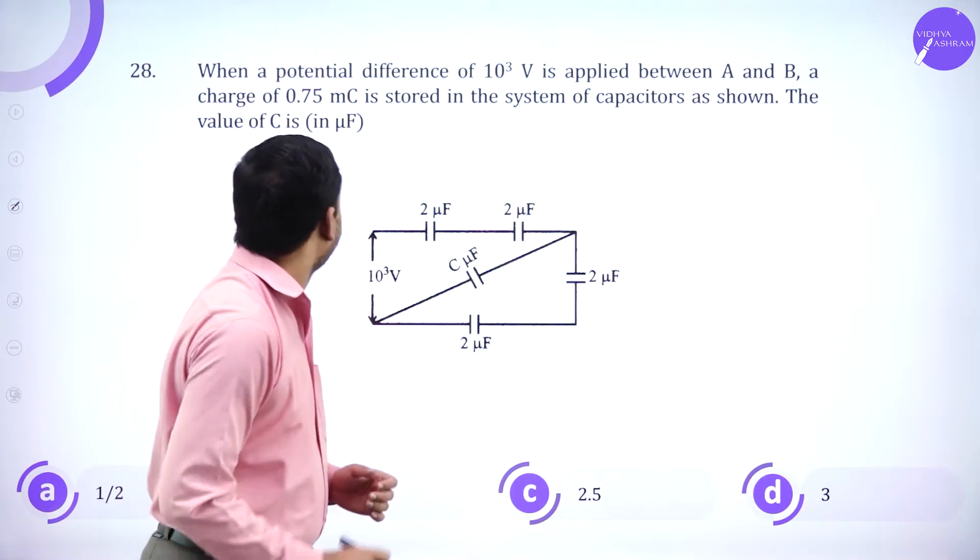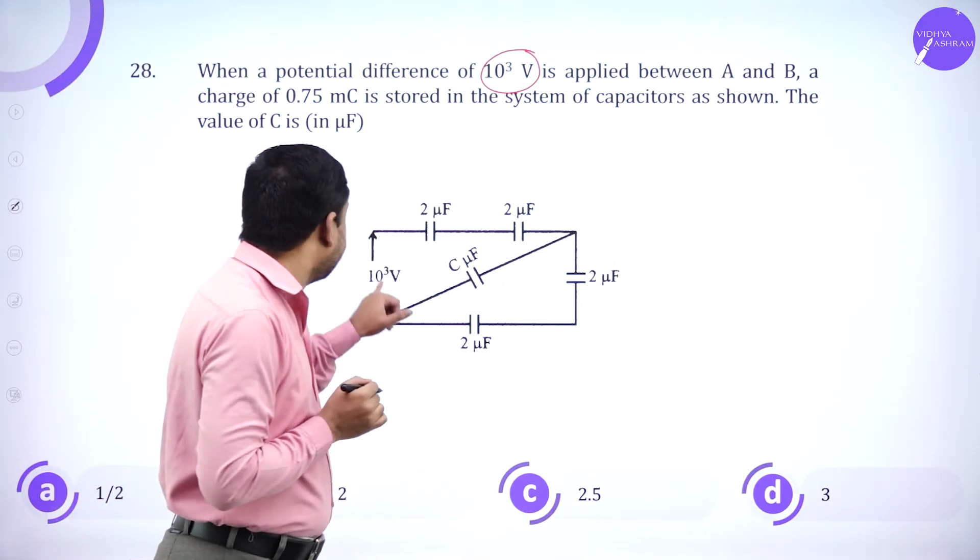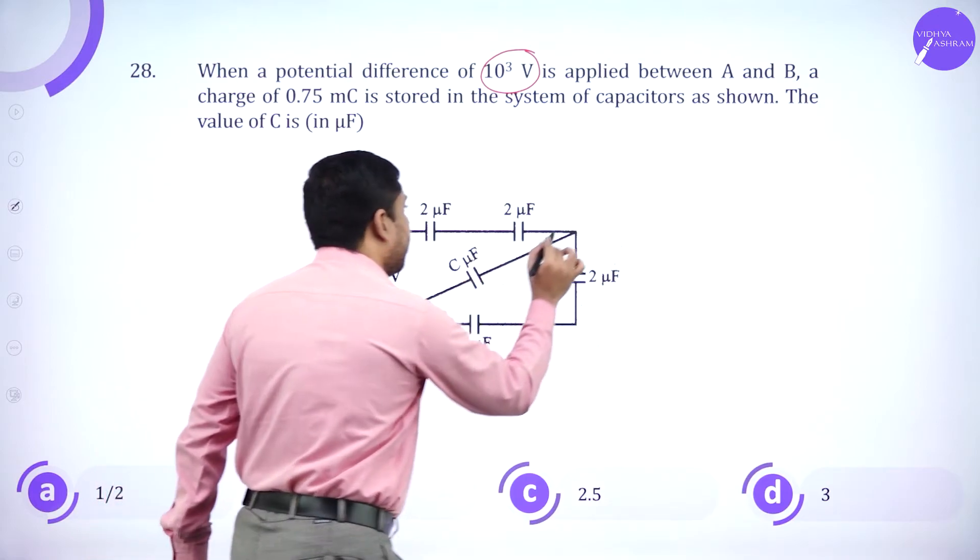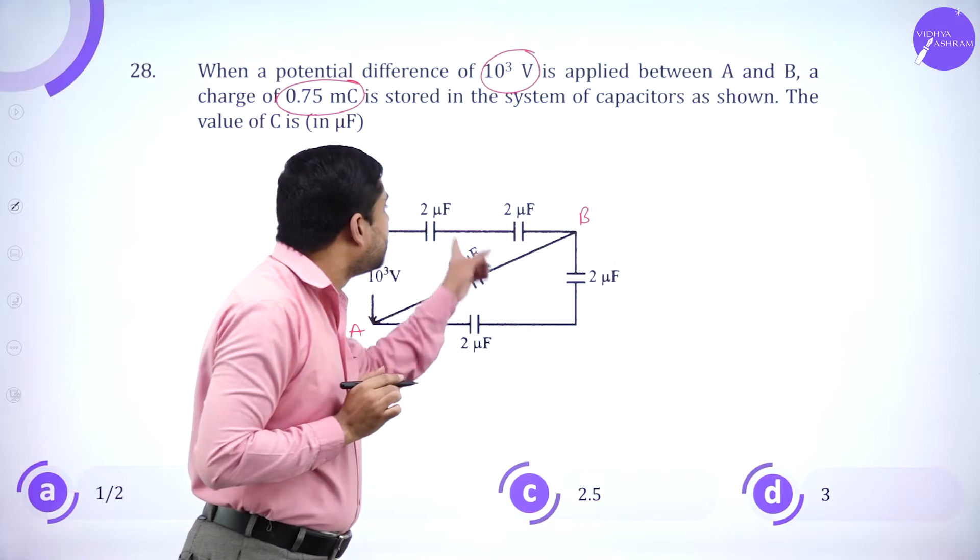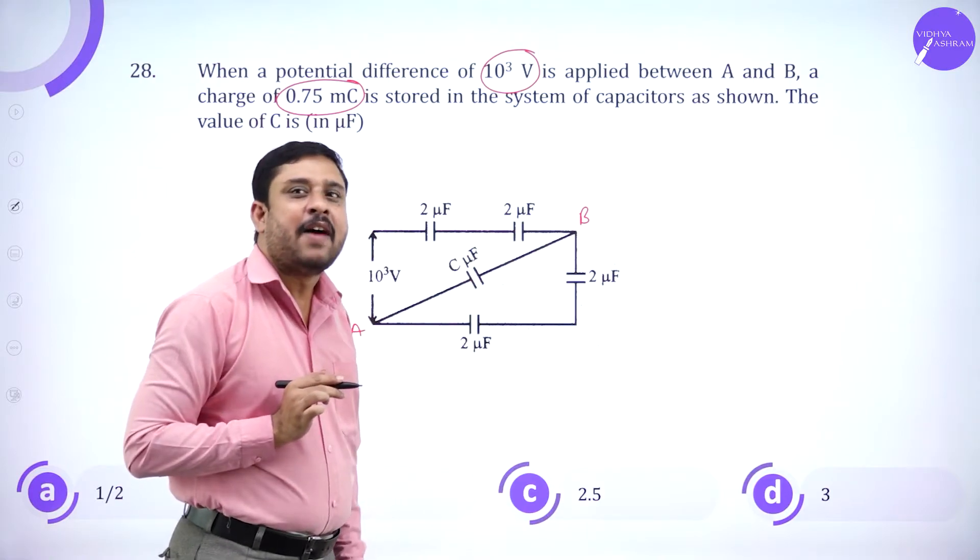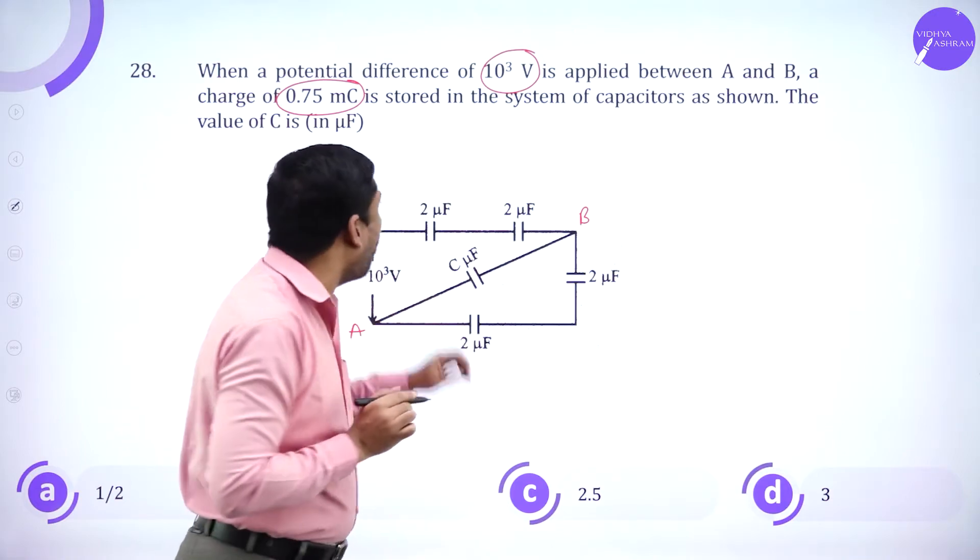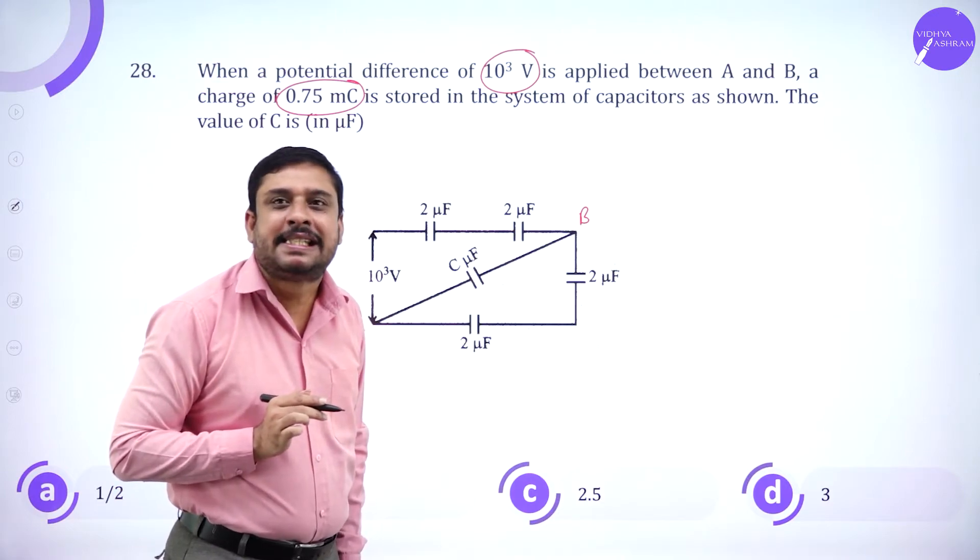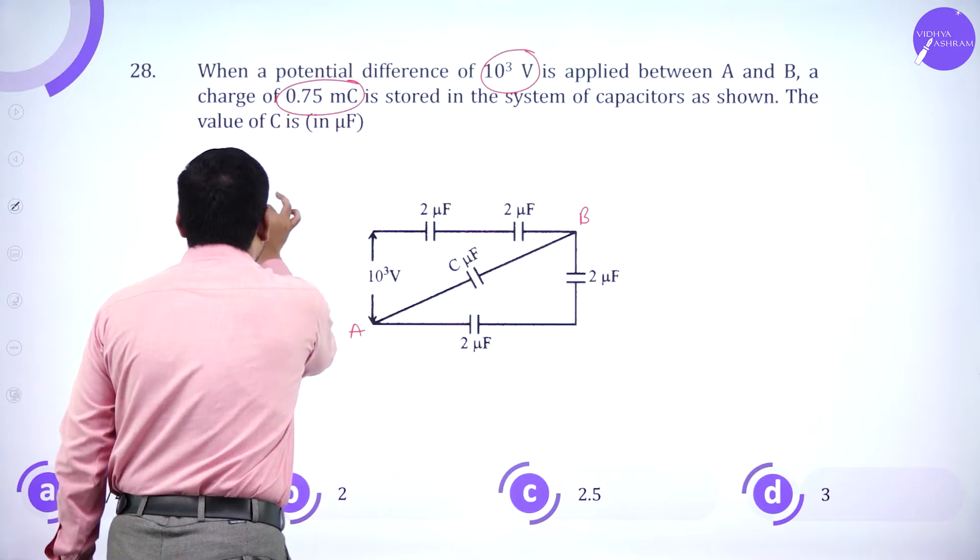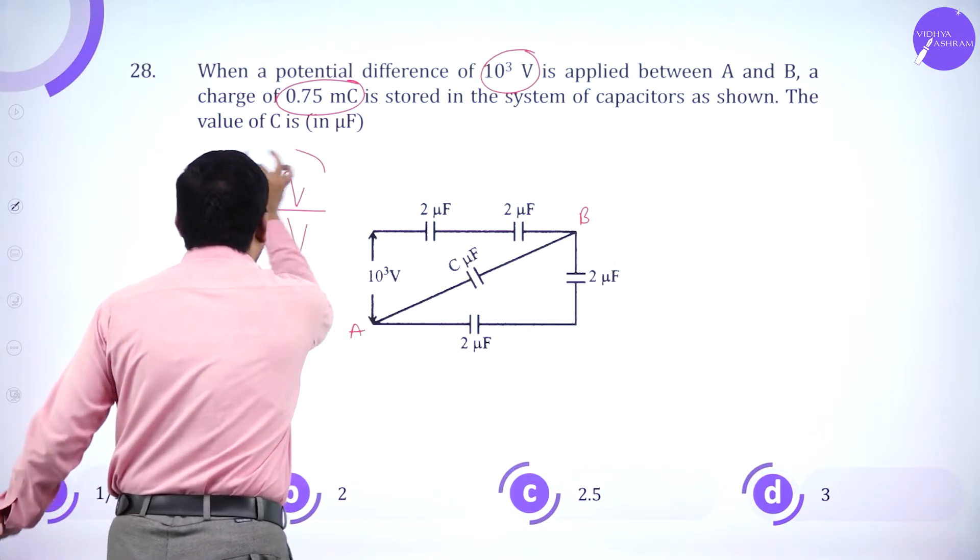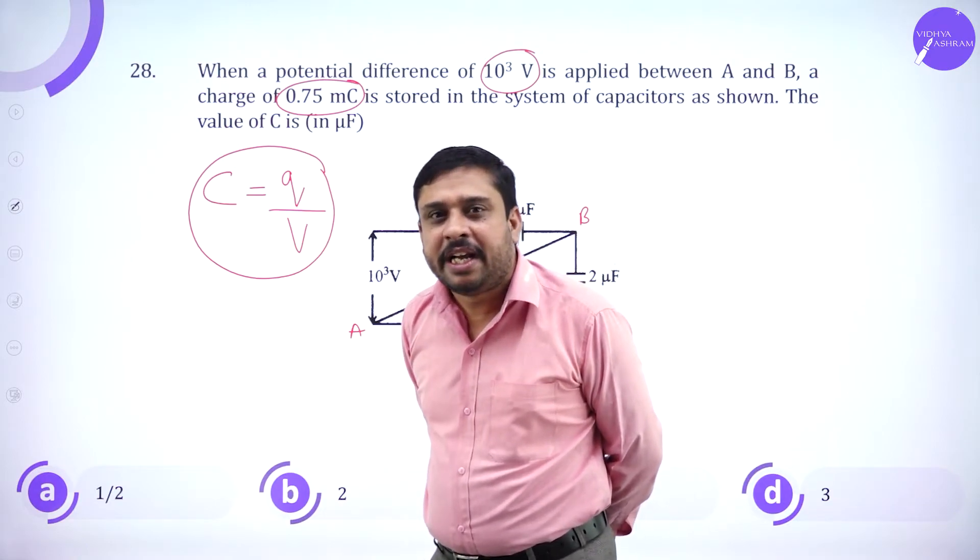Next one. When a potential difference of 10 to the power 3 volts is applied between A and B, a charge 0.75 millicoulomb is stored in the system. The value of C has to be calculated. And all of us know, C is Q divided by V. Basic definition of capacitance, Q divided by V.